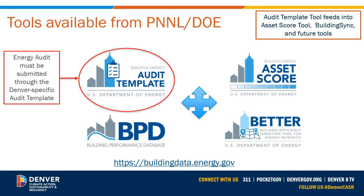Once the audit is complete, it must be submitted through the audit template tool, which will create a PDF to be uploaded with your timeline adjustment application. Denver has worked with the Pacific Northwest National Laboratory (PNNL) to customize their audit template tool for Denver's building performance policy. Once your building's audit data is in the template, you can access the information in a number of U.S. Department of Energy tools. Go to buildingdata.energy.gov for more information on the DOE's Building Energy Asset Score, BuildingSync, and other tools to help you get the most out of your energy audit data.